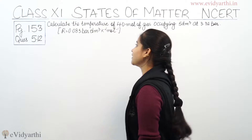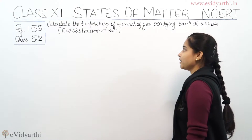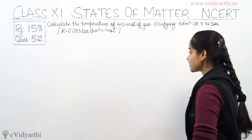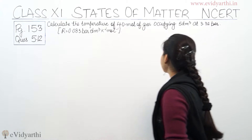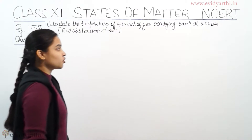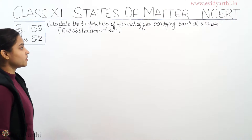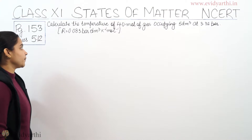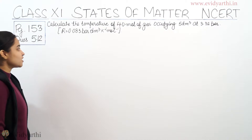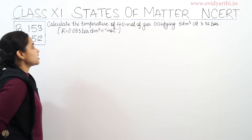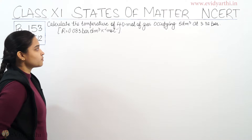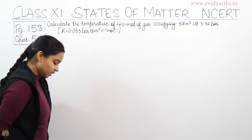So what is the question? The question is: calculate the temperature of 4 moles of gas occupying 5 decimetre cube at 3.32 bar. The gas constant R is given as 0.083 bar decimetre cube Kelvin inverse mole inverse.